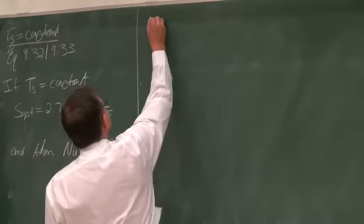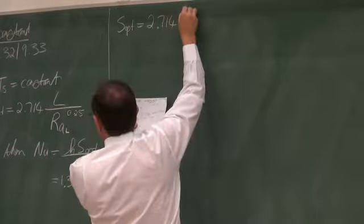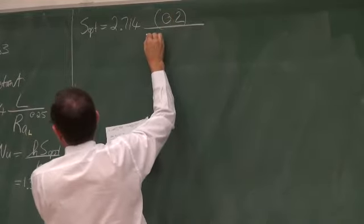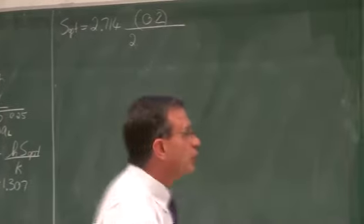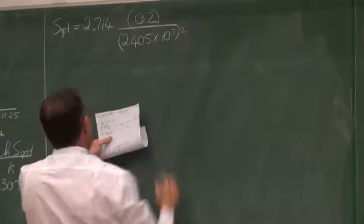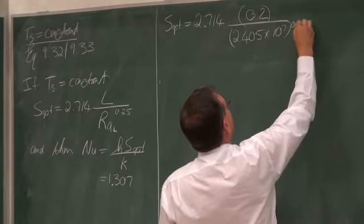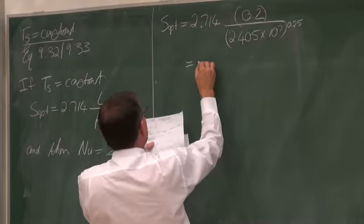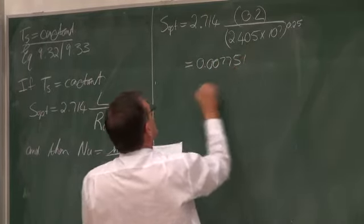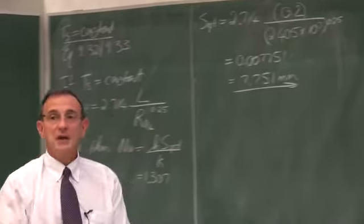So let's calculate this optimum distance. S_opt = 2.714 × L / Ra_L^0.25 = 2.714 × 0.2 / (2.405×10⁷)^0.25. Calculating that gives 0.007751 m, which is equal to 7.751 mm. So that is the optimum distance.